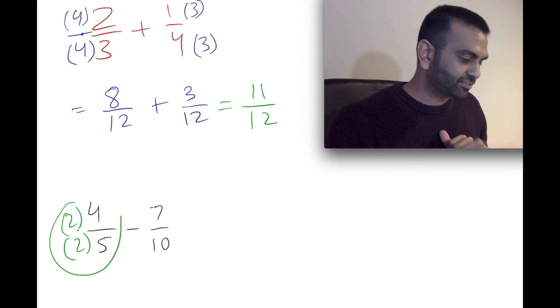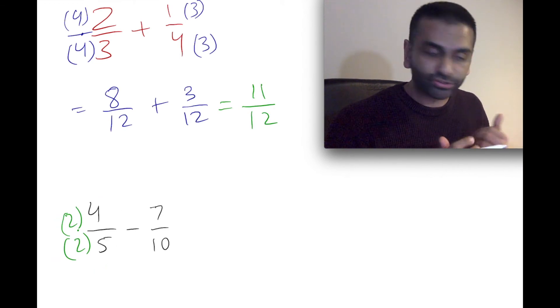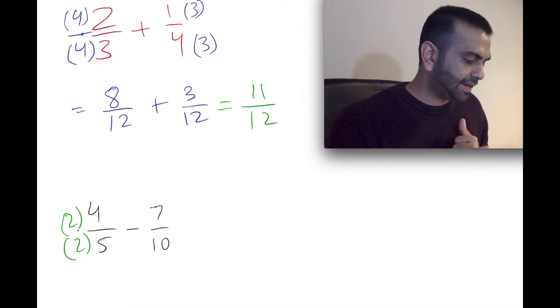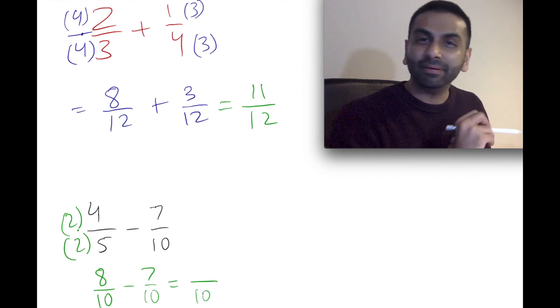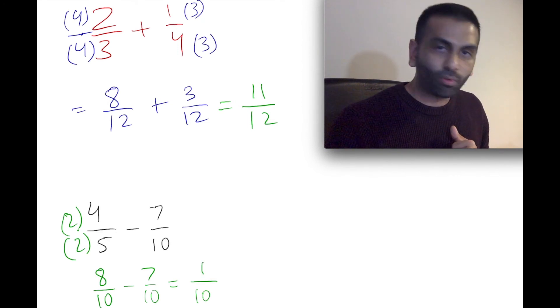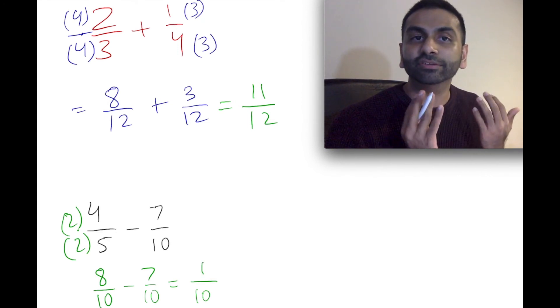you multiply this first term by 2 over 2, and that'll make it 8, because 4 times 2, over 10, because 5 times 2, and then we have minus 7 over 10. And now, keep the denominator the same, 10, but subtract the numerators. 8 minus 7 is just 1, so our final answer here is 1/10.